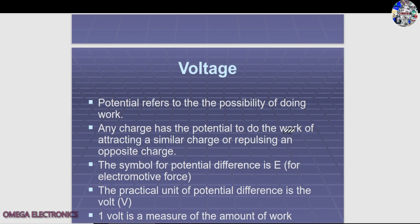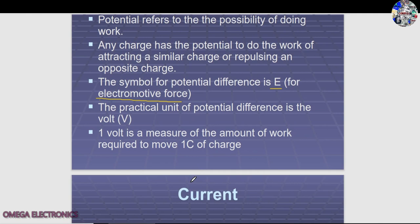The symbol for potential difference is E, or electromotive force (EMF). EMF is the resistance within batteries, sometimes called the EMF of the set. In practice, we use the symbol V for potential difference. One volt is a measure of the amount of work required to move one coulomb of charge — the work done in bringing a charge from infinity to a particular point is known as potential difference.